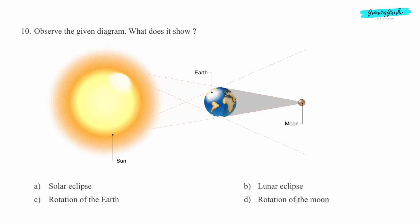When Earth comes between Sun and Moon and Moon doesn't get any light from the Sun, it's called Lunar Eclipse. So the answer is Option B.